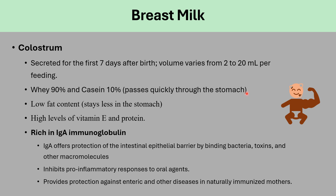Continuous feeding will decrease the enterohepatic circulation and decreases the risk of jaundice or breastfeeding jaundice. Also, this milk's low fat content means it stays less time in the stomach. It has high levels of vitamin E and protein, and is rich in immunoglobulin A. The immunoglobulin A offers protection of the intestinal epithelial barrier by binding bacteria, toxins, and other macromolecules. This milk decreases the risk of necrotizing enterocolitis, especially in preterm infants, and provides protection against enteric and other diseases.